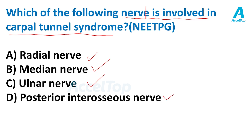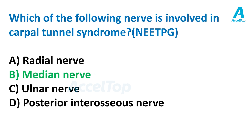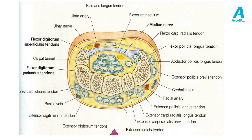The correct answer is median nerve. Now we will see this in detail. Here is a cut section at the level of the wrist, and we can see the median nerve just below the flexor retinaculum, which appears white in color.